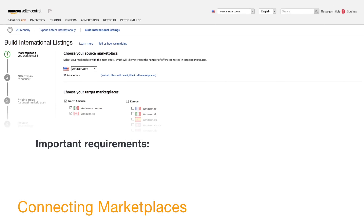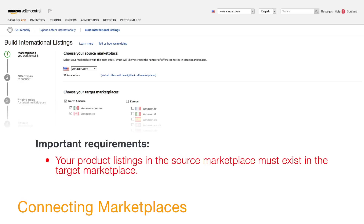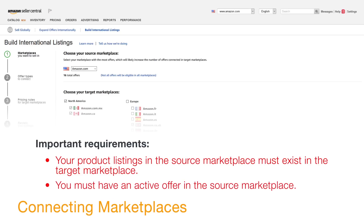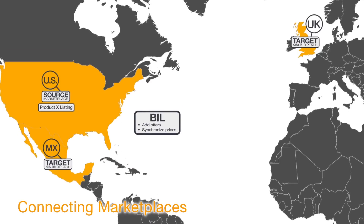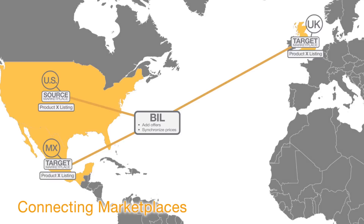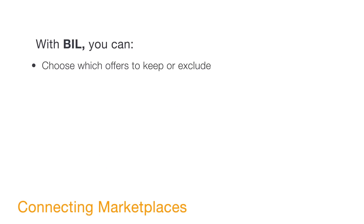To make sure BIL successfully connects a source marketplace with target marketplaces, your offers need to meet these requirements: the product listing must exist in both the source marketplace and the target marketplace, and the listing must have an active offer in the source marketplace. When you add new offers on the source marketplace and the same product listing exists on the target marketplaces, BIL adds the new offers and synchronizes the offer prices on the target marketplace.